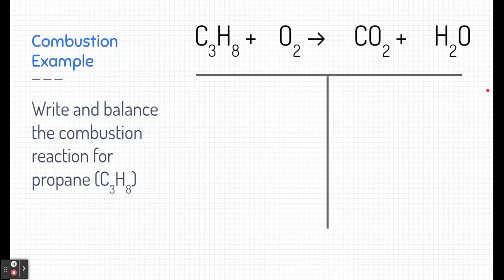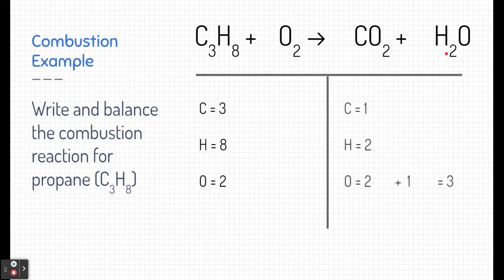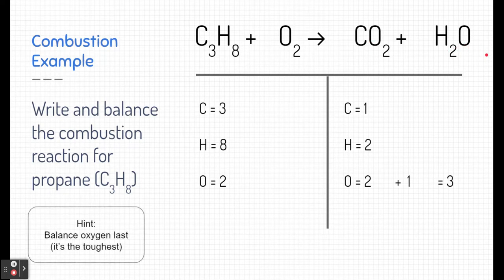Now we need to figure out how to balance this reaction. When we balance, we want to take an accounting on both sides. In the reactant side we have three carbons, eight hydrogens, and two oxygens. In the product side it gets a little more complicated. We have one carbon and two hydrogens, but we have two oxygens in two different areas. We have two oxygens here and one there, and we need to make sure that we add all those oxygens together. This leads me to my first hint: it might be best to balance oxygen last. It's often the toughest thing to deal with in a combustion reaction.